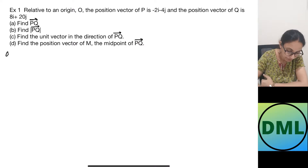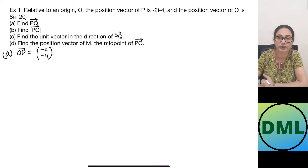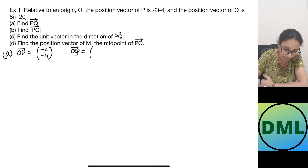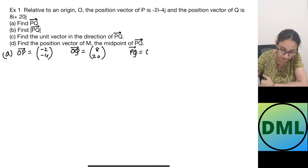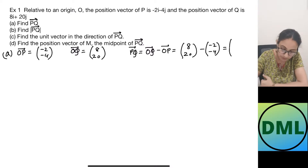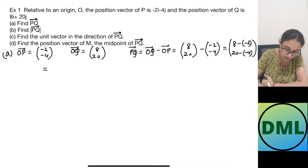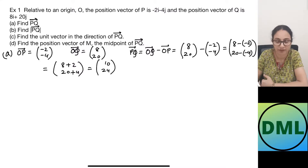Now let's solve this. OP, the position vector of P, is given by (−2, −4) in column vector form, and the position vector of Q is (8, 20). To find PQ, the vector PQ can be written as OQ minus OP. Substituting: OQ is (8, 20) minus OP which is (−2, −4). That gives 8 minus (−2) over 20 minus (−4), which is 8+2 over 20+4, equal to (10, 24), or written as 10i plus 24j.